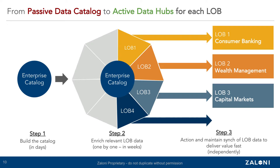Step one is to build the catalog. It mentions an enterprise catalog, but this could easily be a departmental or source-specific catalog. In practice, we've seen customers start with their data lake and then add additional enterprise data warehouses or other data sources for specific line of business uses. If you start by cataloging just your data lake or focusing on the needs of a specific line of business, it can set you up for early success that you can build upon in later phases.